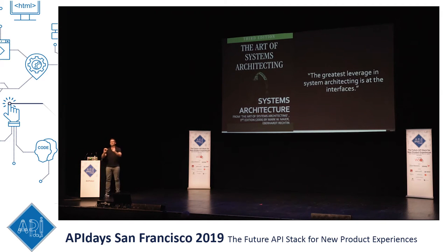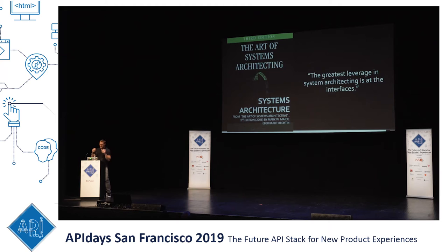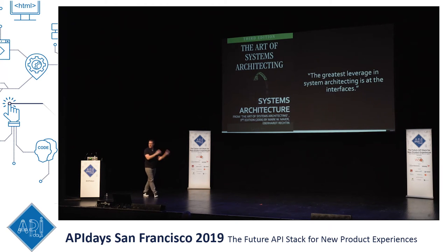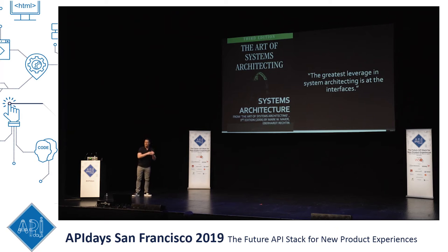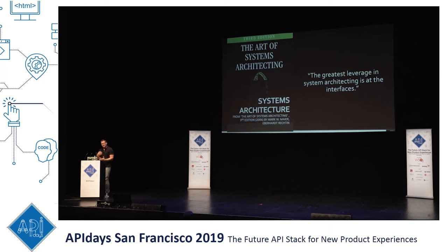So why are APIs so critical? Why do these things keep coming up when we talk about complexity and systems and software? It's because the API is the greatest leverage point in a system. They point out that the greatest leverage in the system is architecting at the interfaces. APIs are the means by which we can start grappling with some of this complexity.